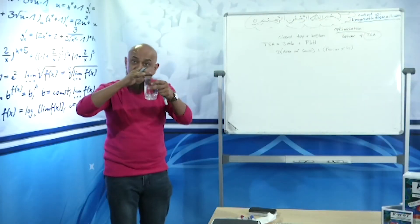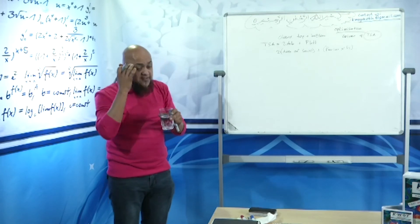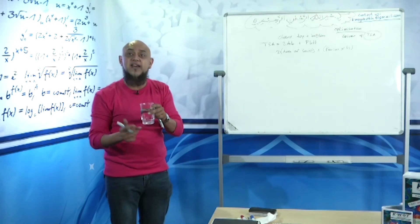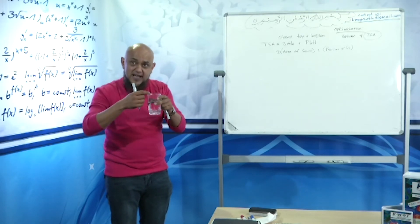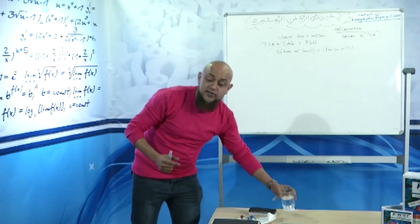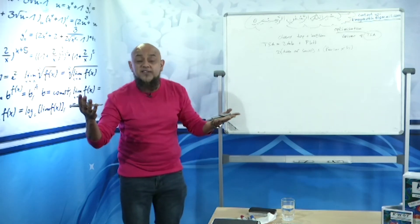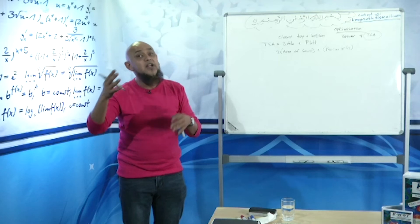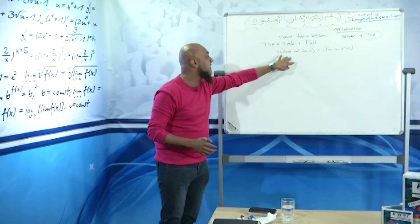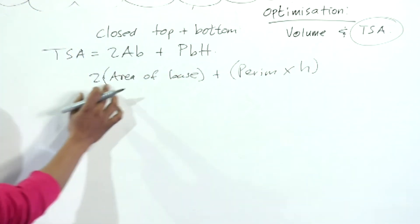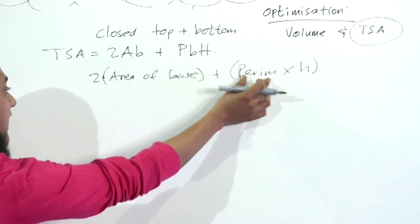If it's open on the top — like this glass — common sense: how many bases does it have? Only one. So we say one times area of base plus perimeter of the base times the height. If the top and bottom are both open — like a toilet roll holder — there's no base, so you just say perimeter of the base times your height.